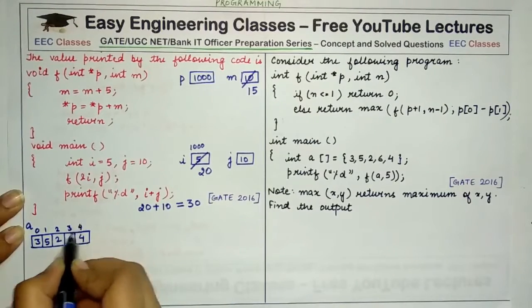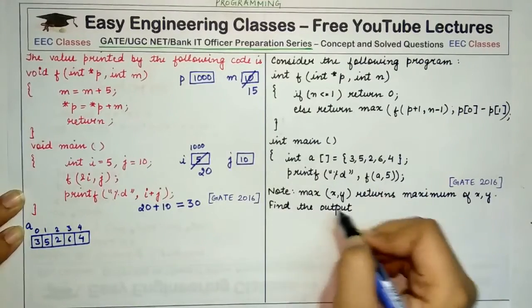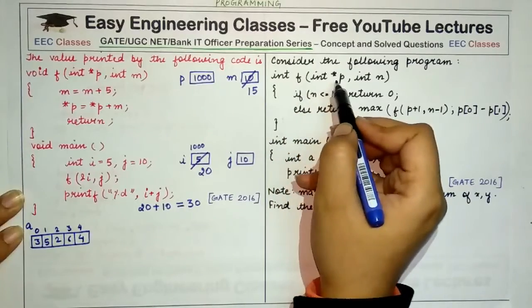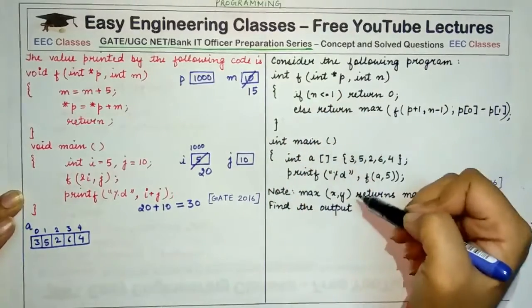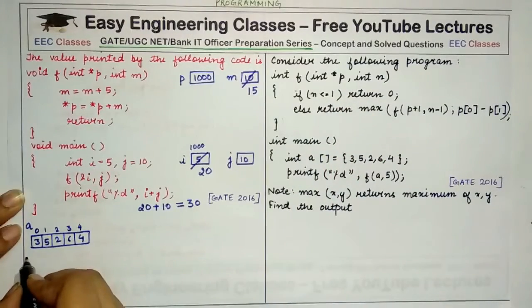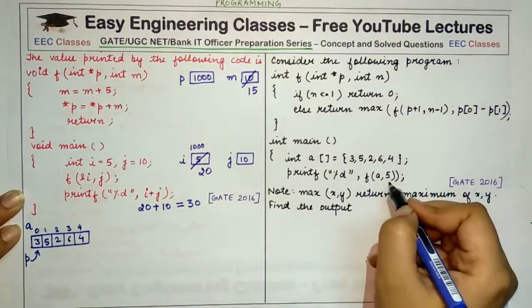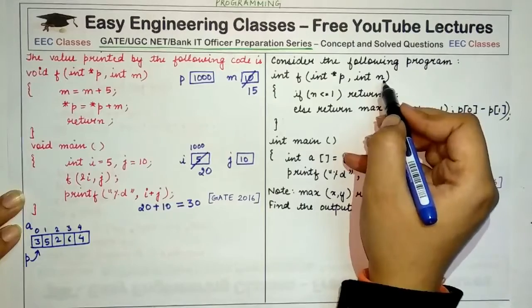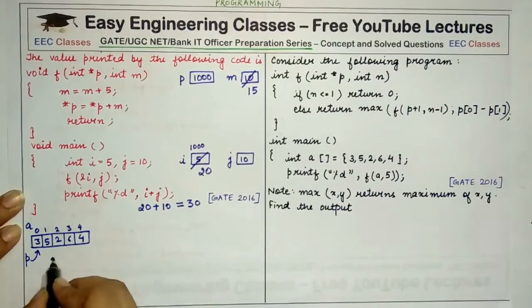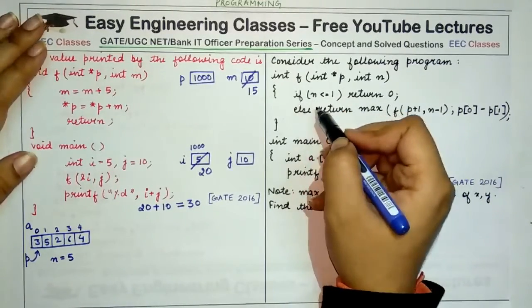When we call f(a, 5), this call passes the address of array a to pointer p, so p starts pointing to the starting location of array a. The value 5 is assigned to n. So n equals 5. When we enter the if condition — if n is less than or equal to 1 — it is false.